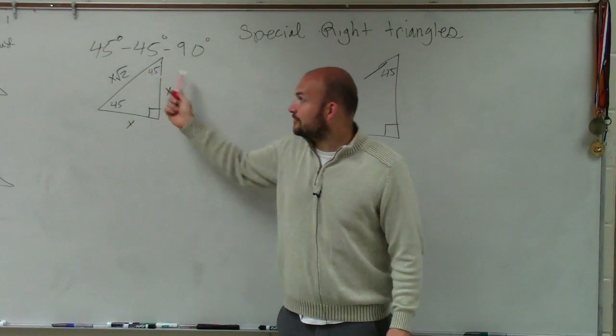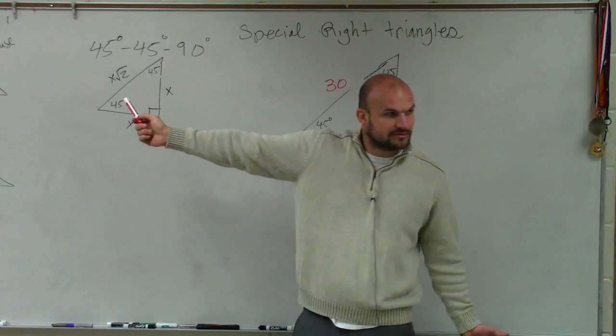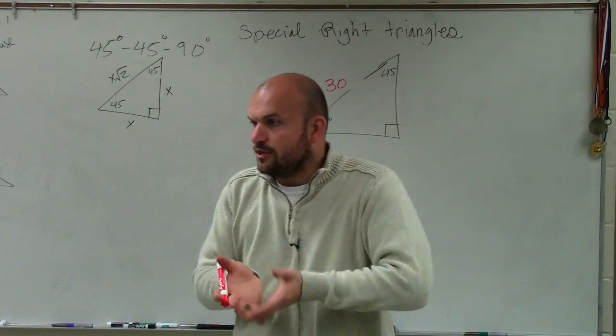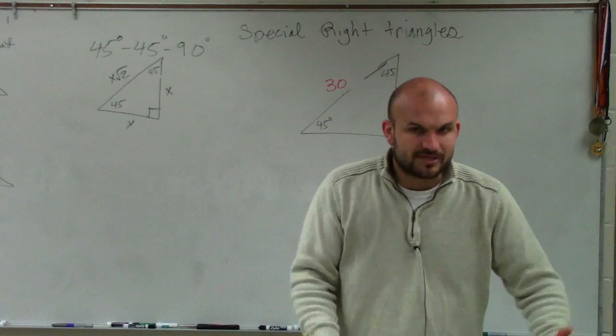Hypotenuse. What are we multiplying x by? The square root of 2. The square root of 2, right? So if you have the legs, you know that the other leg is exactly the same. To find the hypotenuse, you multiply by the square root of 2.